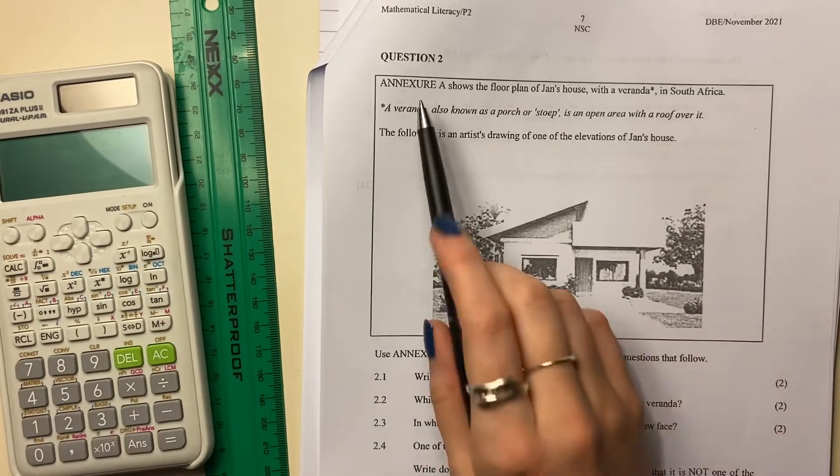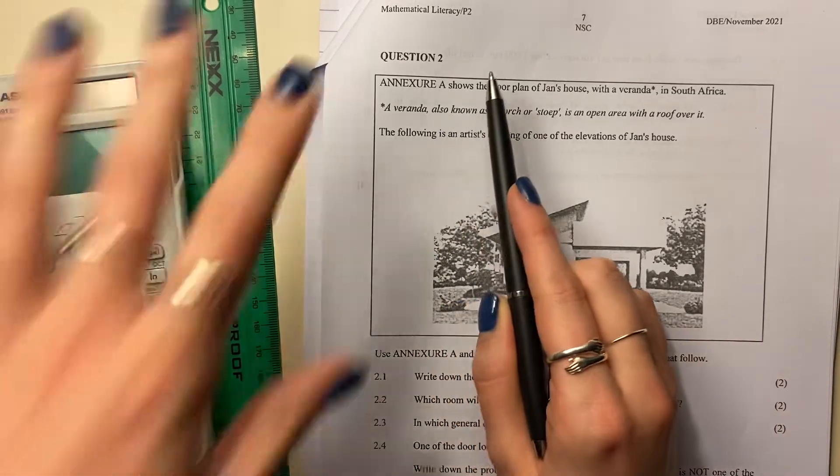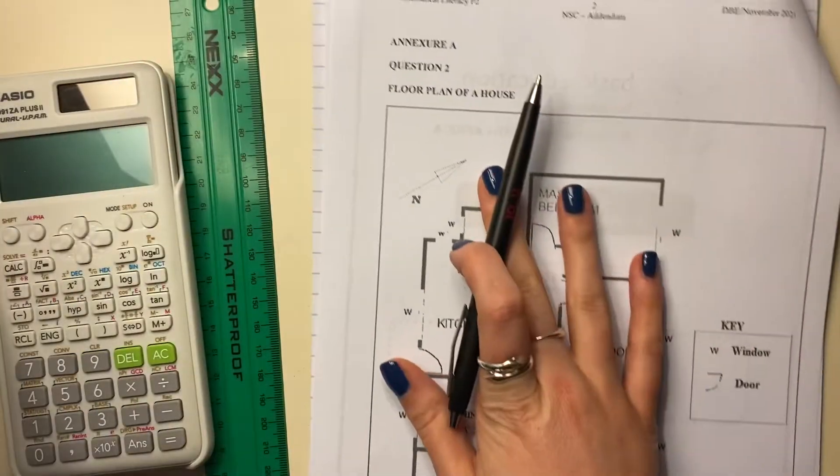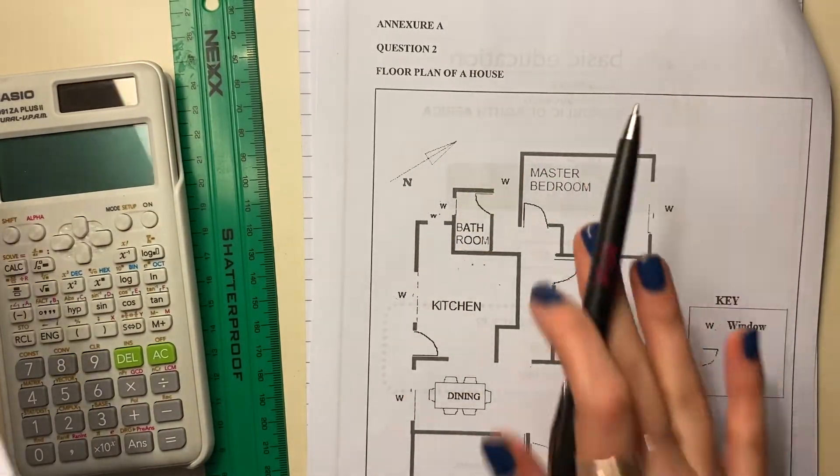Let's start with question two. Annexure A, so as soon as you see that, make sure that you go and find your annexures. So here's my annexure. It's a floor plan. Make sure you have that.